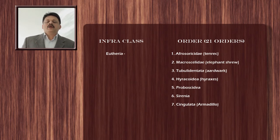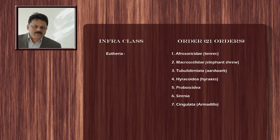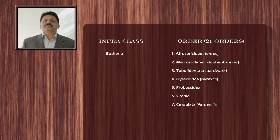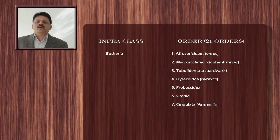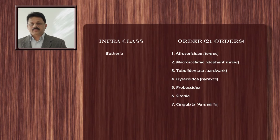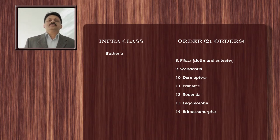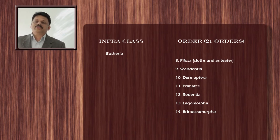The fifth order is Proboscidea, which includes the elephants. The sixth order is Sirenia, which includes oceanic mammals such as dugongs or sea cows. The seventh order is Cingulata, which includes armadillos. The eighth order is Pilosa, which includes sloths and anteaters. The ninth order is Scandentia, which includes tree shrews. The tenth order is Dermoptera, which includes flying lemurs.